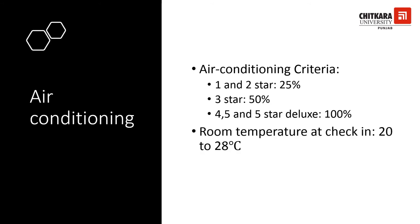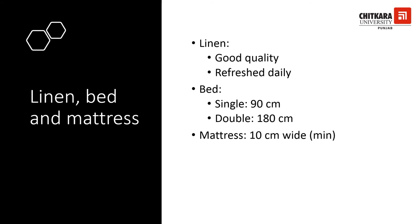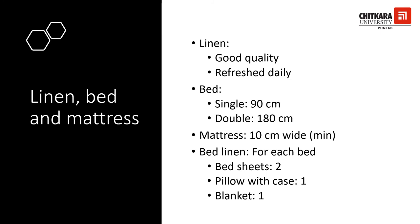An important point regarding air conditioning is that the room temperature must be between 20 to 28 degrees Celsius. Regarding guest linen, it must be of good quality and there must be a change of linen daily or between check-ins. The minimum bed width should be 90 centimeters for a single bed and 180 centimeters for a double bed — desirable for one star hotels and necessary for others. The mattress must be a minimum of 10 centimeters thick — desirable for one and two star hotels and necessary for higher categories. Each bed must have two bed sheets, a pillow, and a blanket.